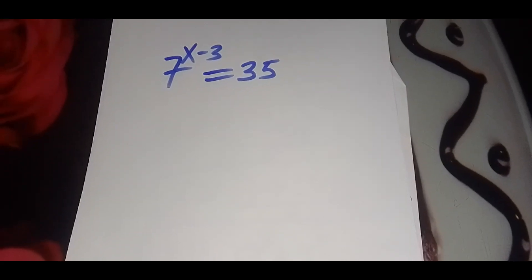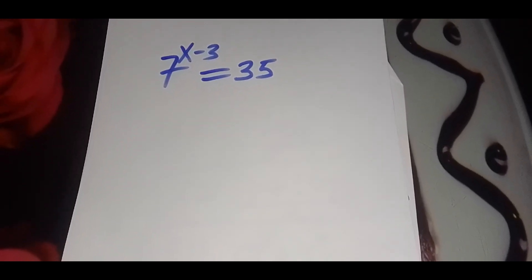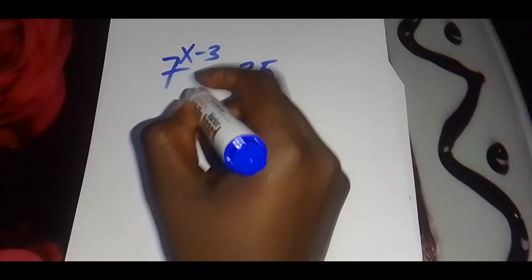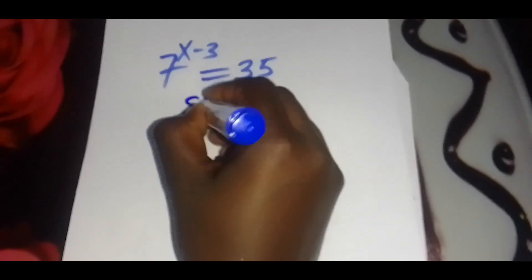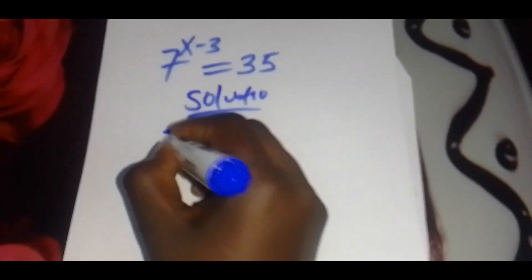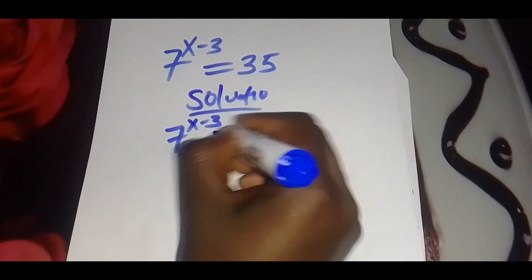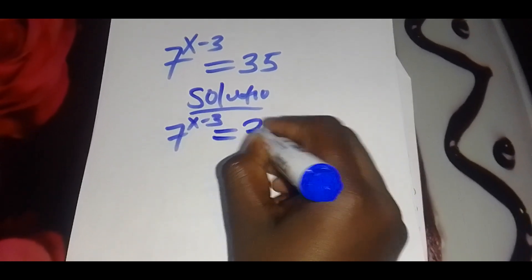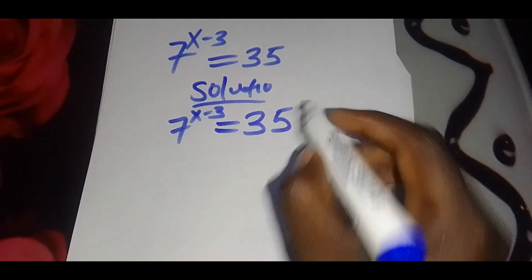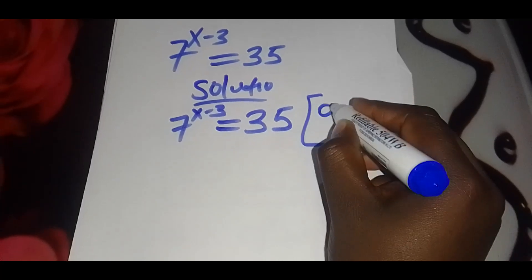Hey everyone, let's look for the value of x given this exponential equation. We have 7 raised to x minus 3, and this is equal to 35.